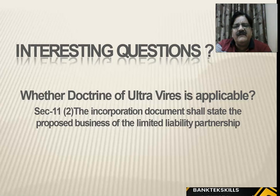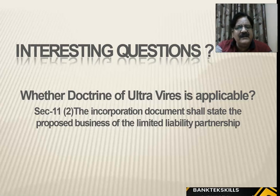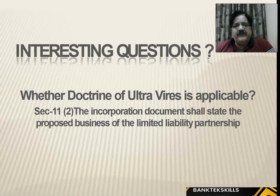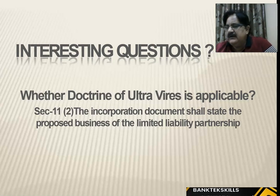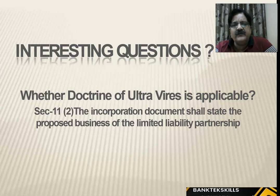Whether the Doctrine of Ultra Vires is applicable: the incorporation documents shall state the business of the Limited Liability Partnership. The Doctrine of Ultra Vires means acting beyond powers. In companies, it is applicable — if a company acts beyond the powers of the directors, that act is considered null and void and has no legal sanctity. This is called the Doctrine of Ultra Vires.